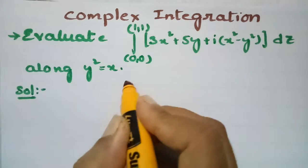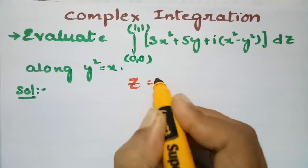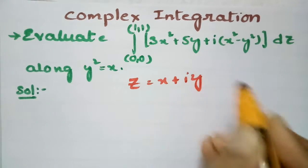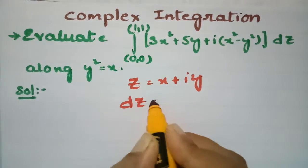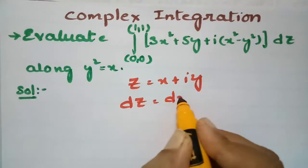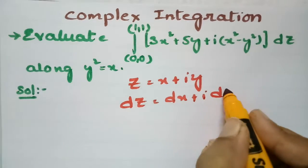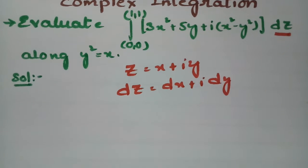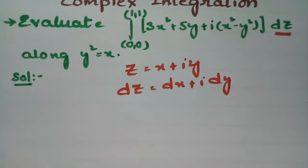As you know, z is nothing but x + iy. So dz, the derivative with respect to x, is dx + i·dy. We will substitute dz = dx + i·dy in the integral.